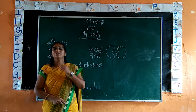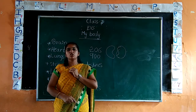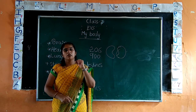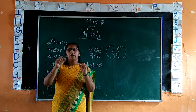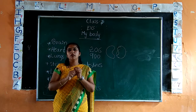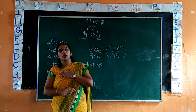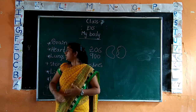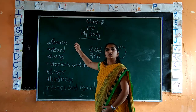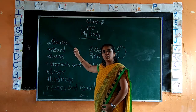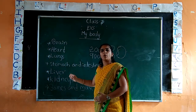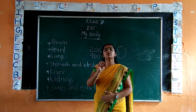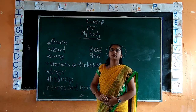Our body is like a machine — it will take care. We also have to take care and save our body. Okay children, homework: you have to list the internal parts of our body and write what is the help of each internal part. Thank you.